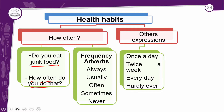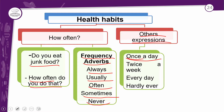E aí, você vai aplicar as frequency adverbs — os advérbios de frequência que a gente aprendeu. E outras expressões também, other expressions: once a day, ou apenas once. Porque esse 'a day' vai depender do que você quer falar — é 'por dia'. Se fosse uma vez na semana, é once a week, e assim por diante. Então, você não precisa usar esse 'a day' junto com o 'once' se a ideia é apenas falar uma vez. Você usa o once, ou então twice — duas vezes — ou every day — todo dia.